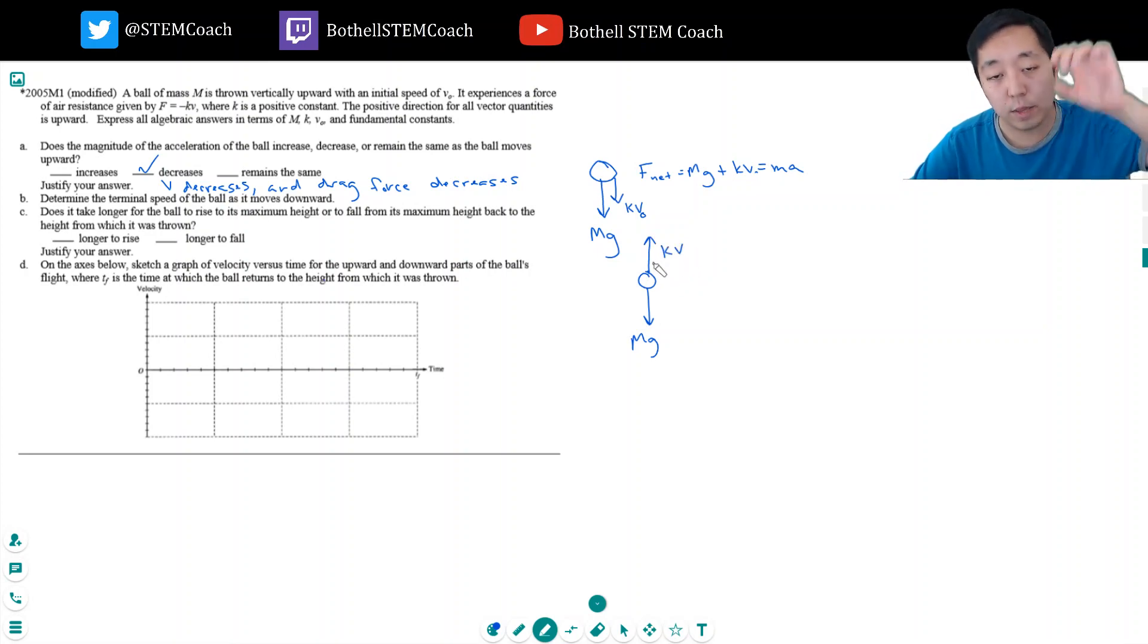And a terminal velocity, that means that I'm at a fixed velocity where these forces are equal. I'm not accelerating anymore. So the net force is equal to kv minus MG, which is equal to zero. Or kv is equal to MG. Or v is equal to MG over K.